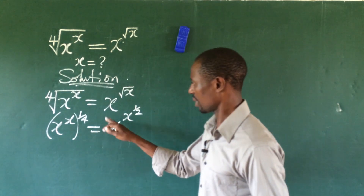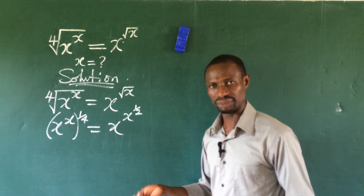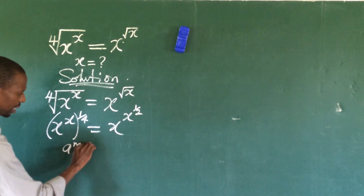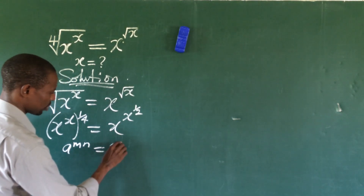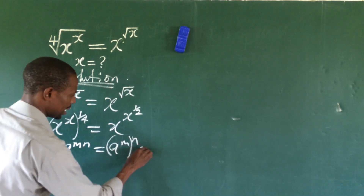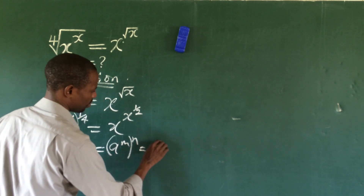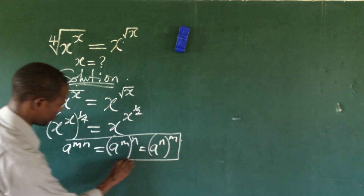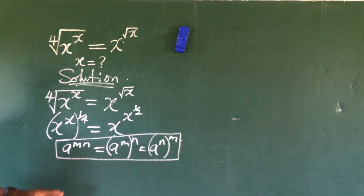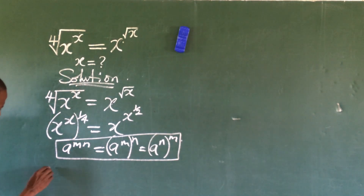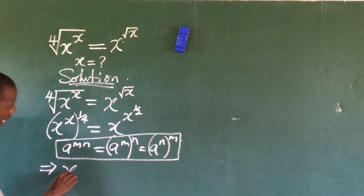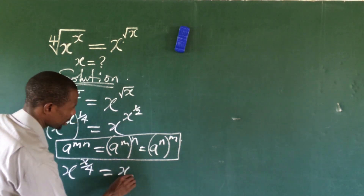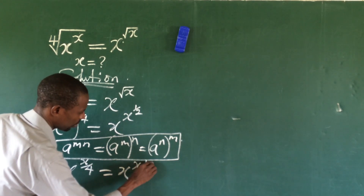Having handled the radicals, we apply some of the laws of indices. We know that if we have a to the power of m·n, this is equal to a to the power of m bracket n, and also equal to a to the power of n bracket m. Applying this rule, this now implies that x to the power of x over 4, is equal to x to the power of x to the power of 1 over 2.